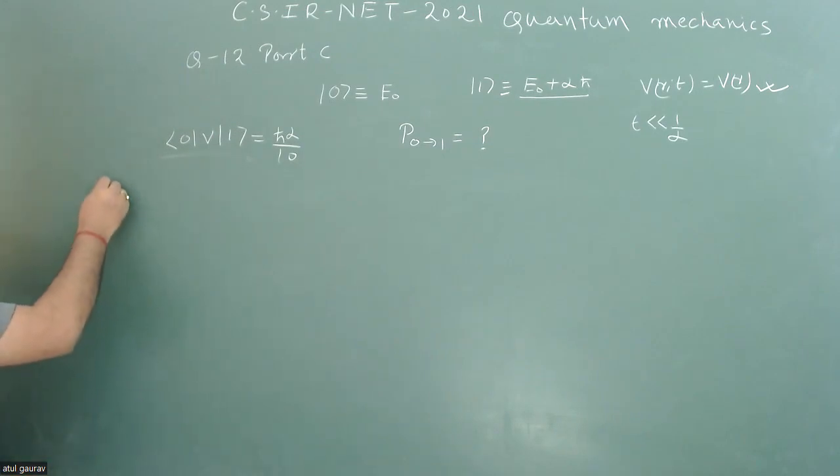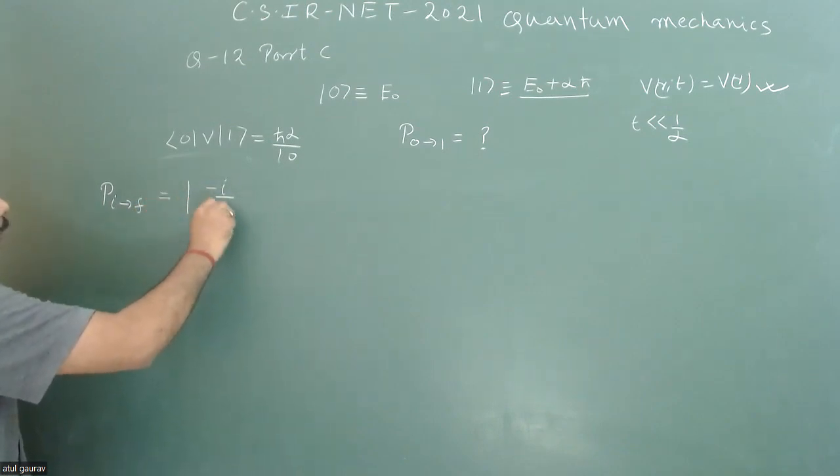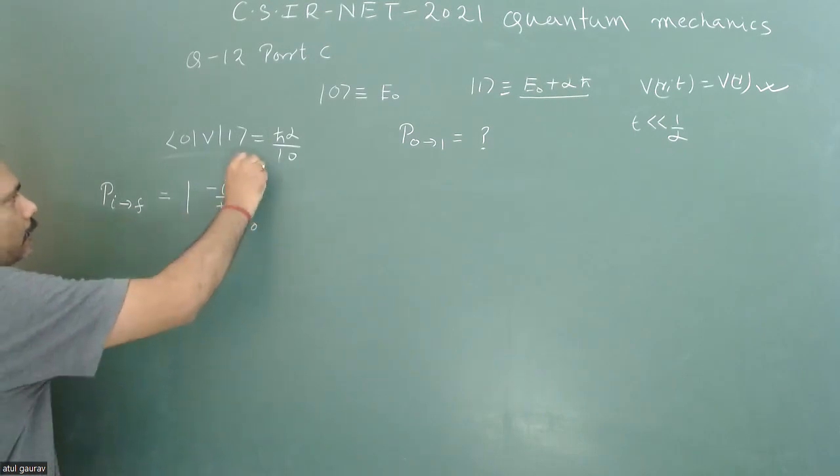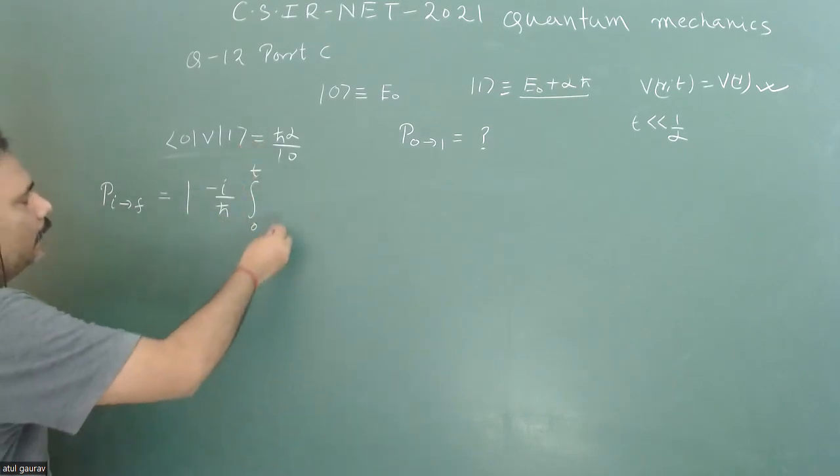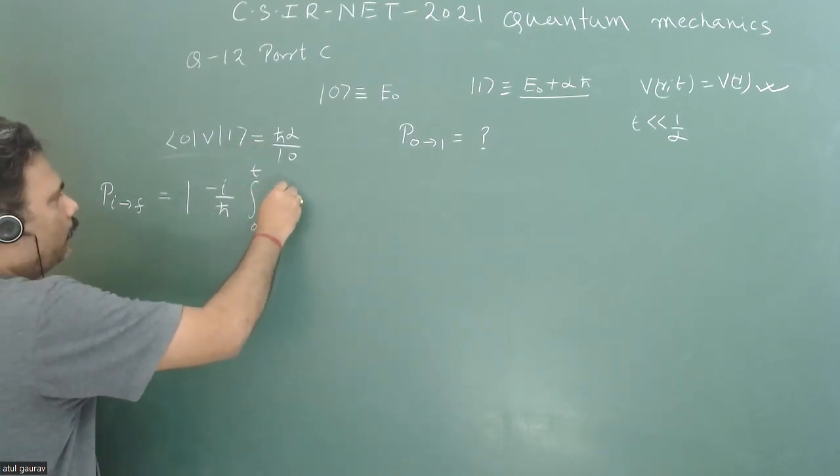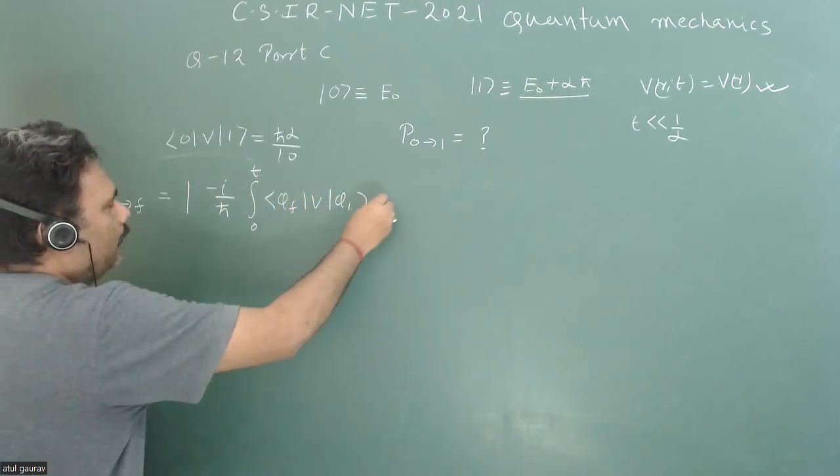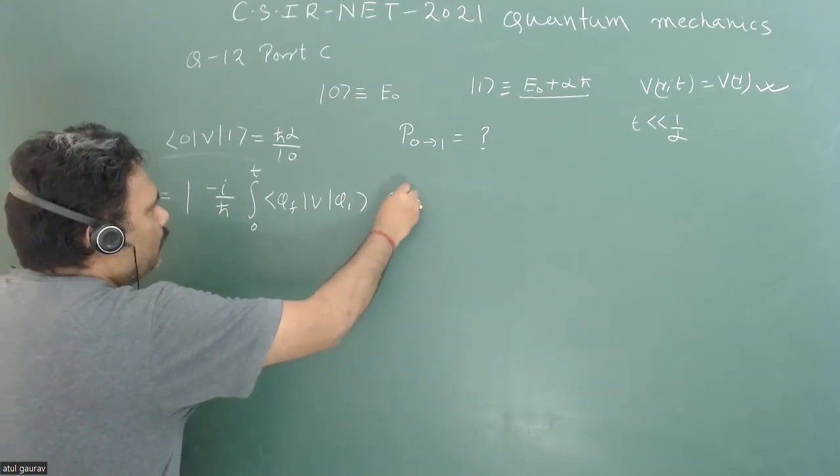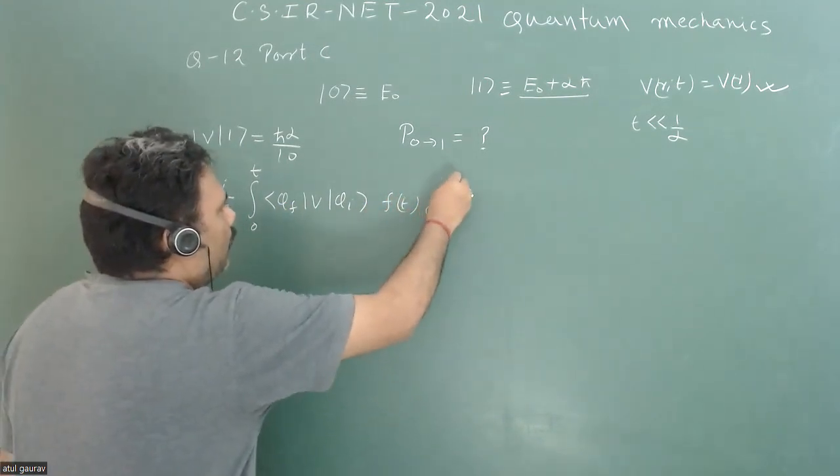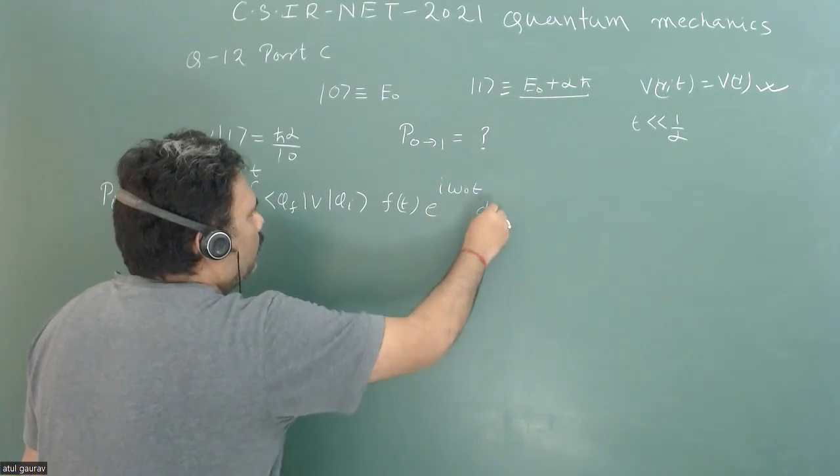If we solve this problem with first principles, then we use the formula P_if. We are taking transition from initial state i to final state f. This will be the modulus of (-i/ℏ) times the integration from 0 to t: ⟨ψ_f|V|ψ_i⟩ f(t) e^(iω₀t) dt.